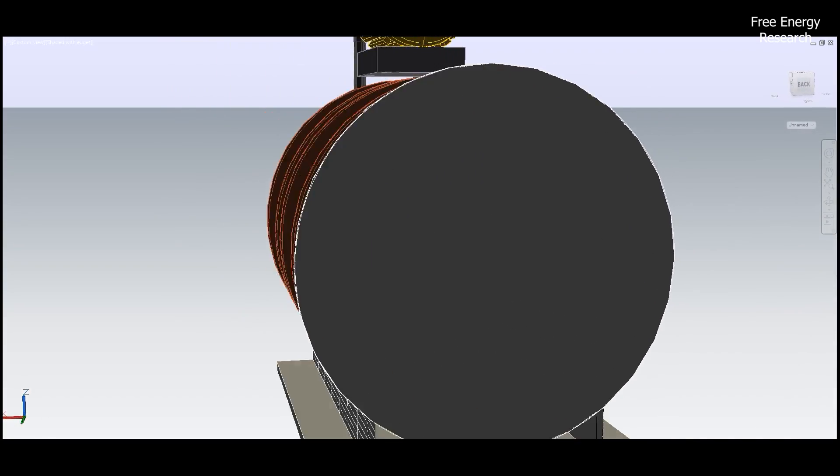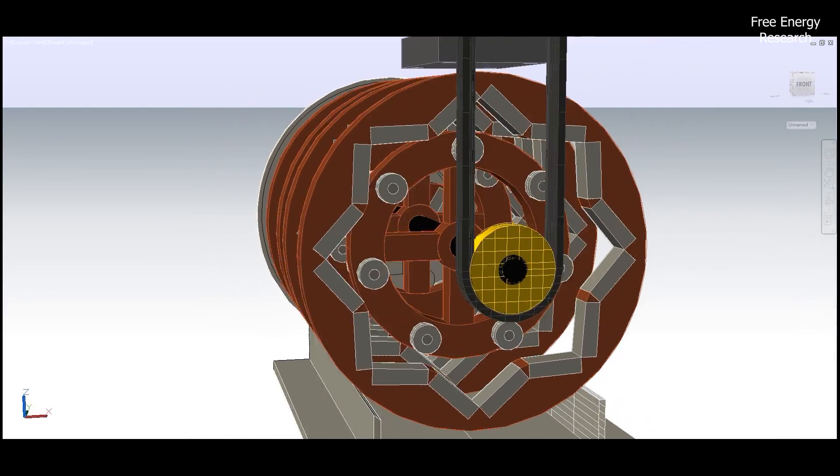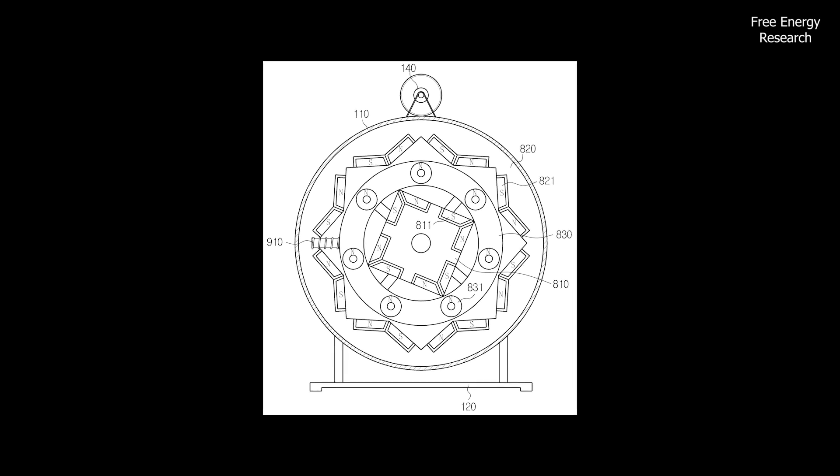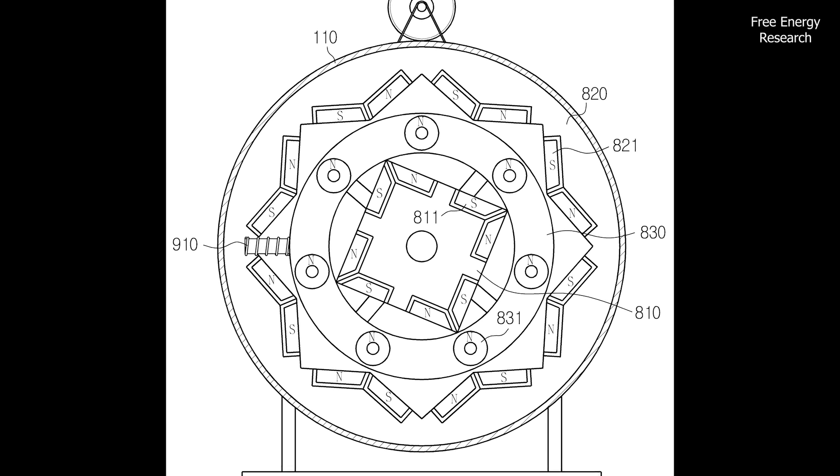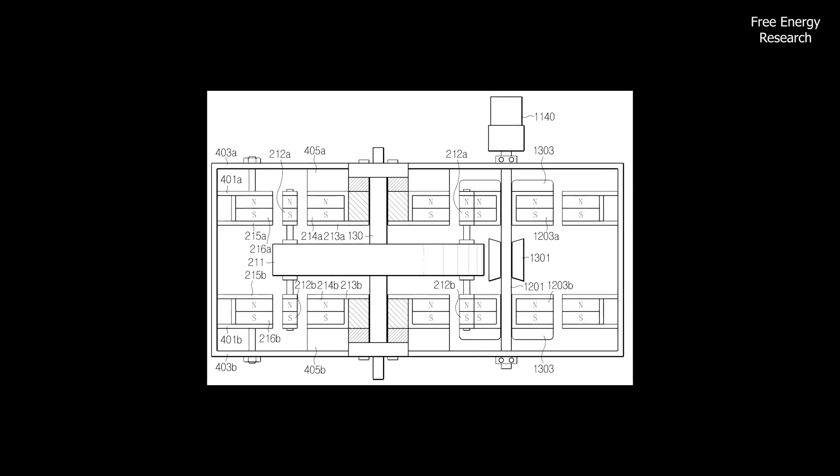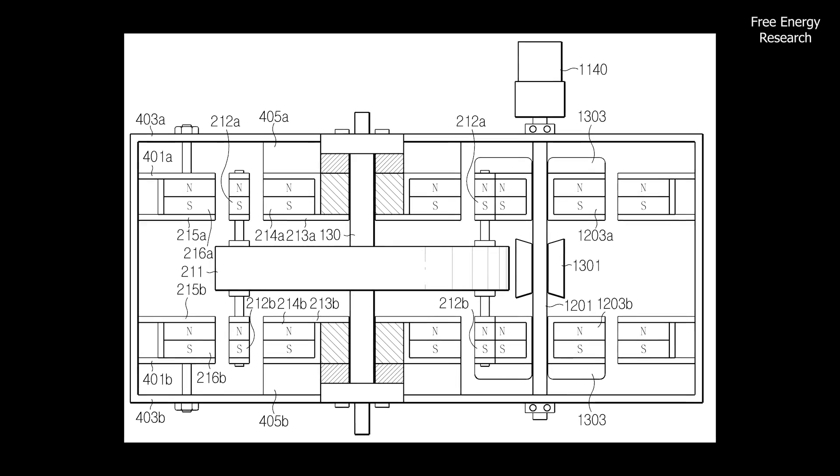The energy generating assistance device embraces technological integration. In certain configurations, electric induction coils are introduced to convert the rotational energy into electrical energy. This opens up possibilities for powering external devices or even contributing to a larger energy grid.